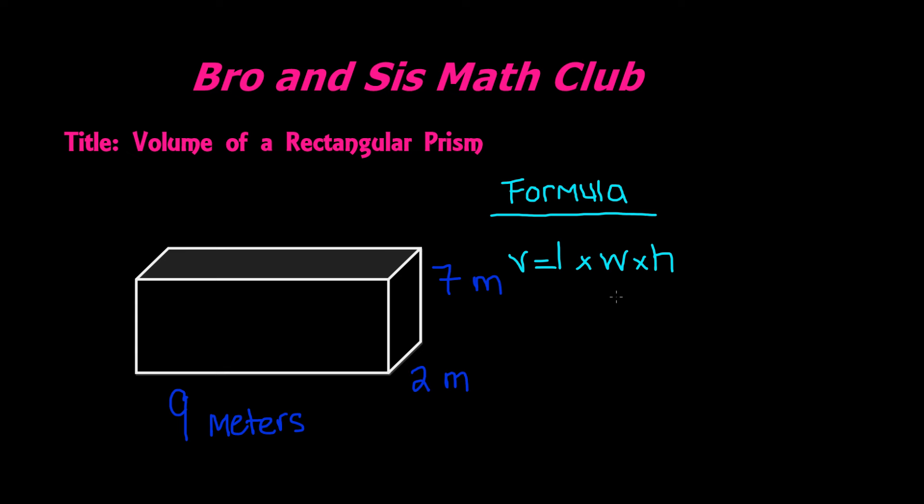So if you plug them into our formula, we will get V equals 9, which is the length, times 2, which is the width, times 7, which is the height.